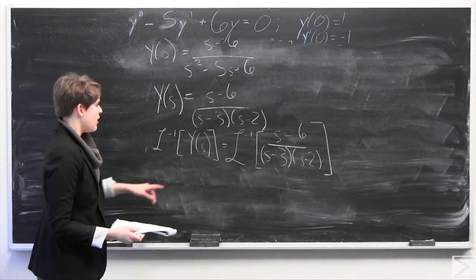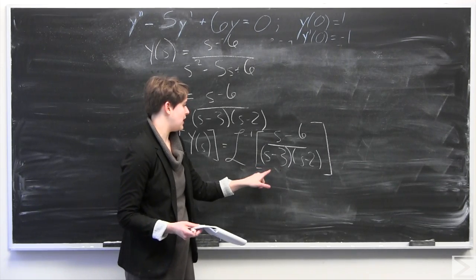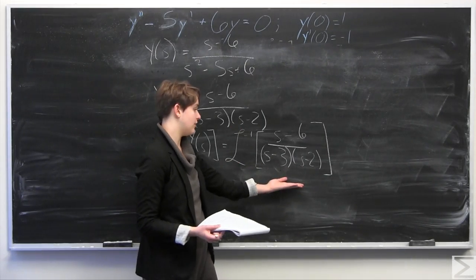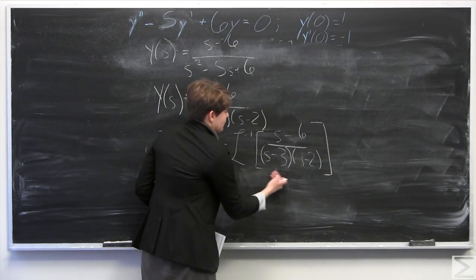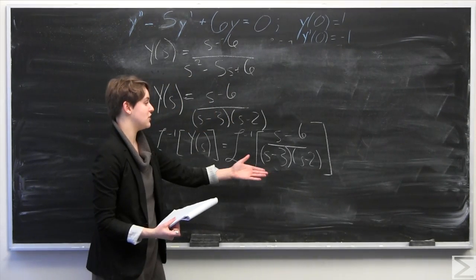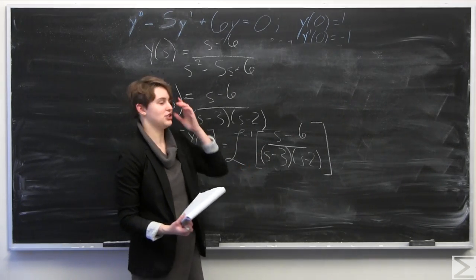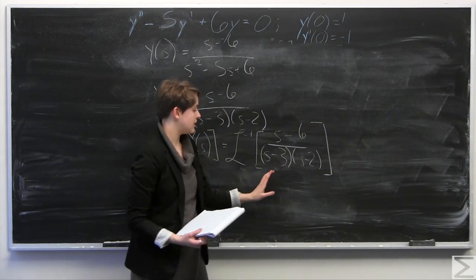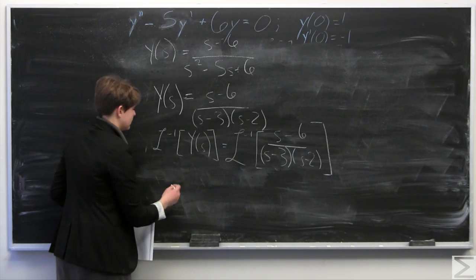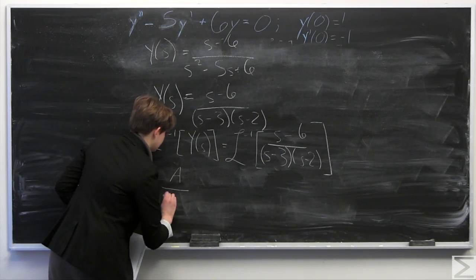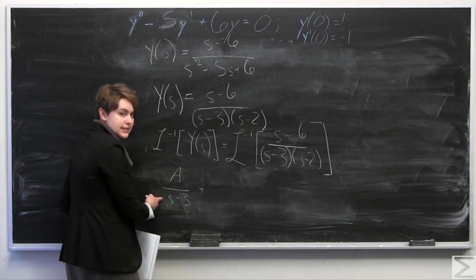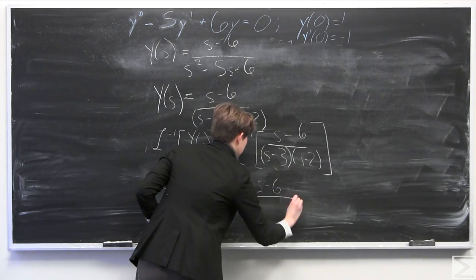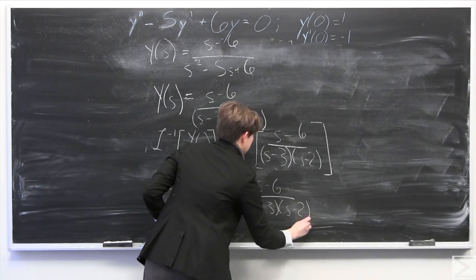We have no known formula to quickly find the inverse Laplace transform of this all in one step, so you may recognize this as a classic case of a fraction that is begging for a partial fraction decomposition. The goal is to turn this one fraction into two fractions — finding an A and a B such that A over s minus 3 plus B over s minus 2 equals s minus 6 over s minus 3 times s minus 2.